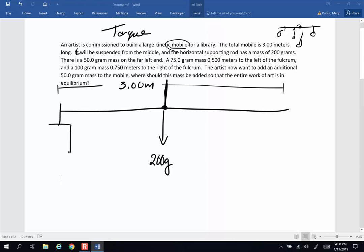There is a 50 gram mass on the far left end. So over here, there is a 50 gram mass and a 75 gram mass is 0.5 meters to the left of the center. So let's take a look at this. If it's three meters all the way across, that means half of this is going to be 1.5 meters, and 0.5 meters is going to be about a third of the way.